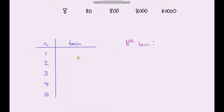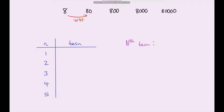Now it's your turn. Try to calculate the nth term of this next sequence — I've put a table there to help you. First, let's work out the common ratio. To go from 8 to 80 we're multiplying by 10, and that's the same for all terms — we're multiplying by 10 each time. So when n equals 1 we've just got 8.